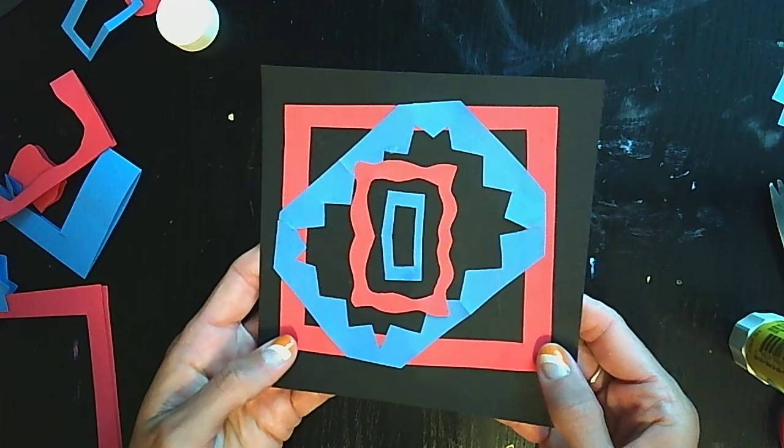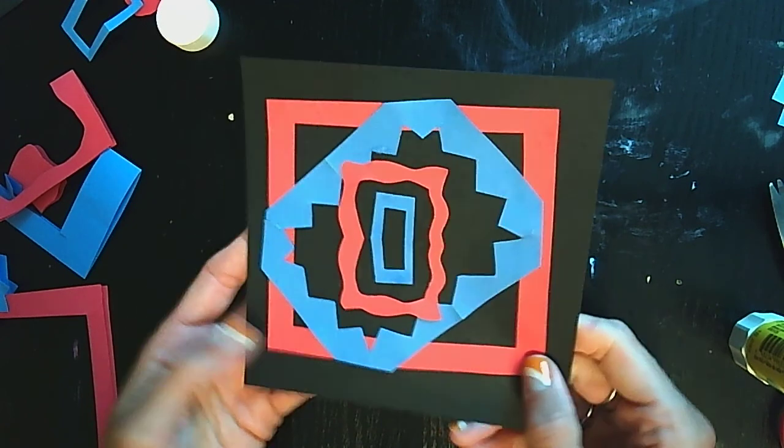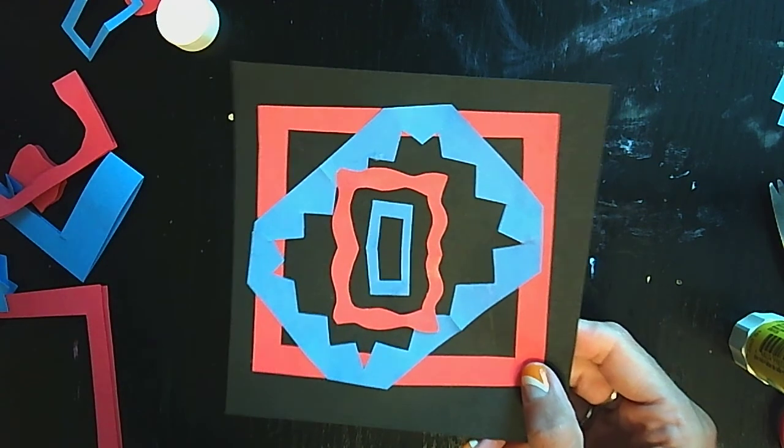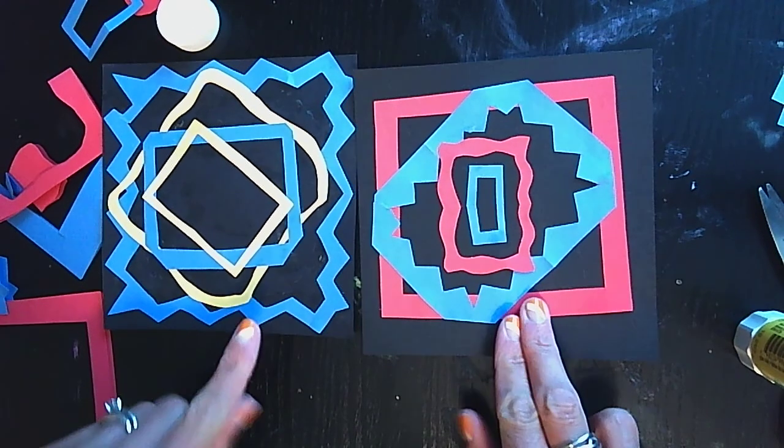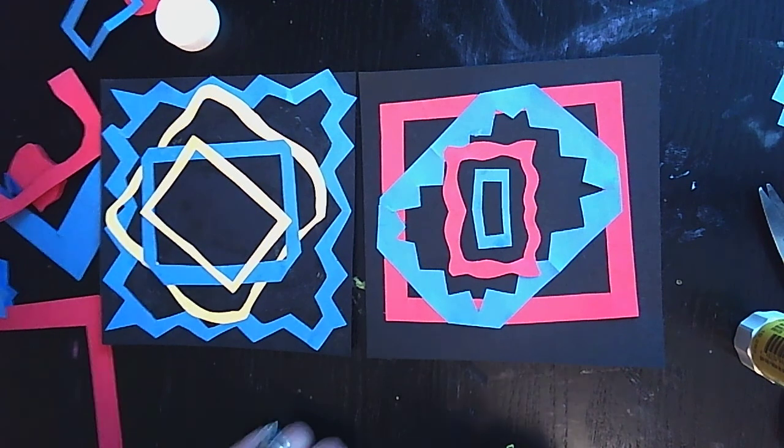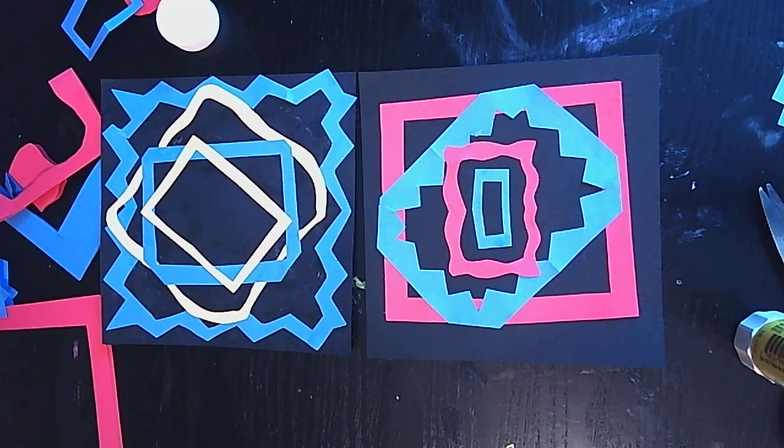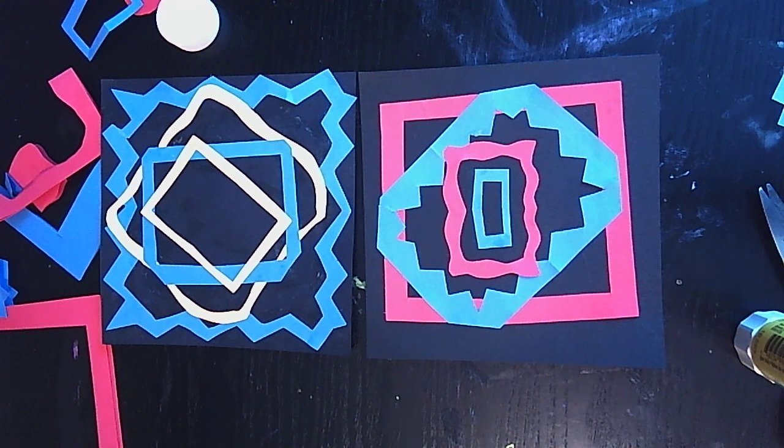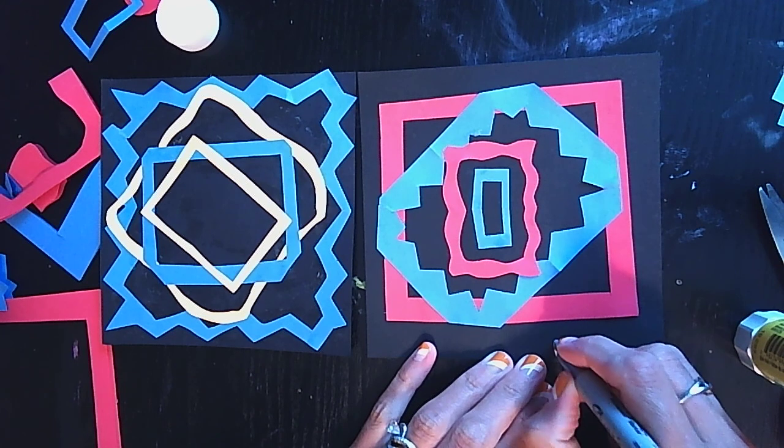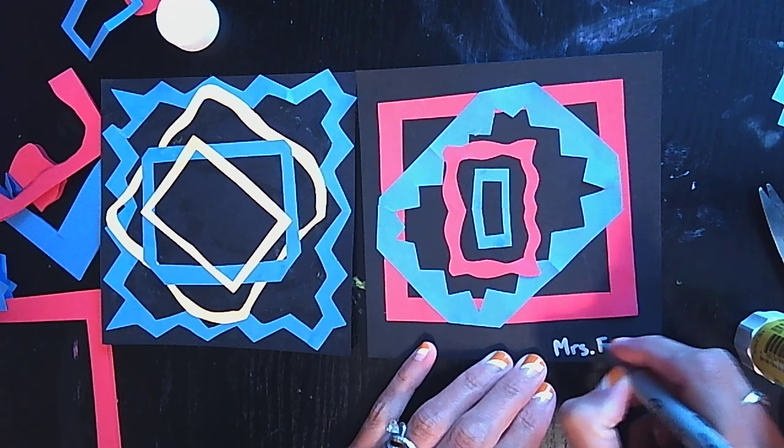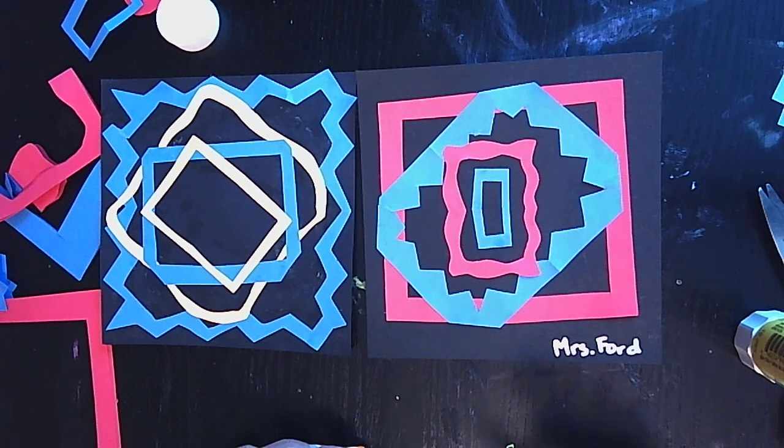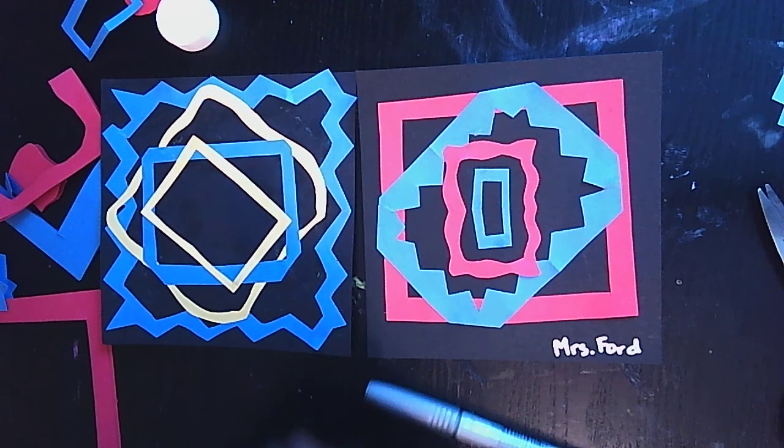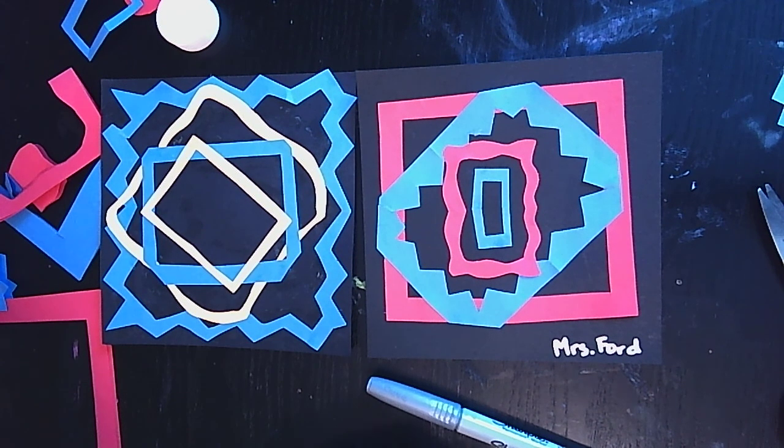We have our abstract cut paper project that we just did. Now notice that everyone's going to be so different. That's okay if they are different because everyone has a different personality, has different paper that they chose. So it's totally up to you. You are the artist. You make the decisions. The last step is we're going to make sure we write our name right on the front. And that is it. If you have any questions please let me know and I hope that you guys had fun making cut paper today. Bye!